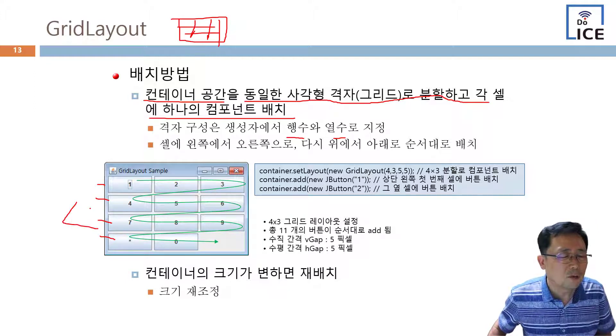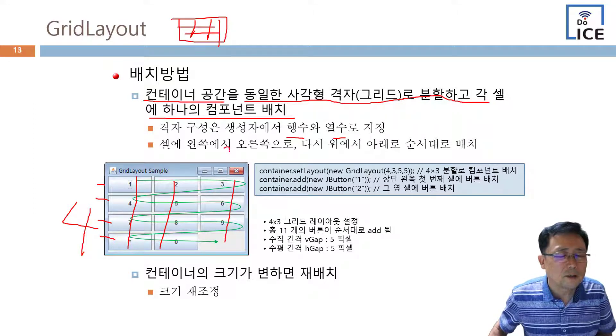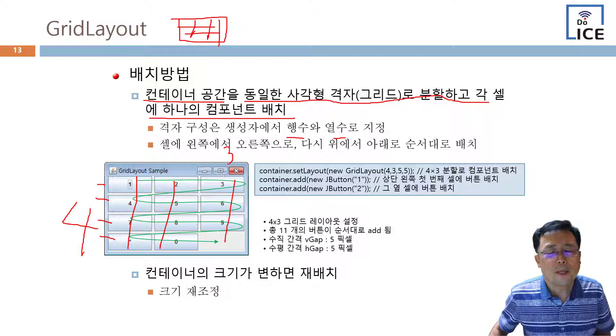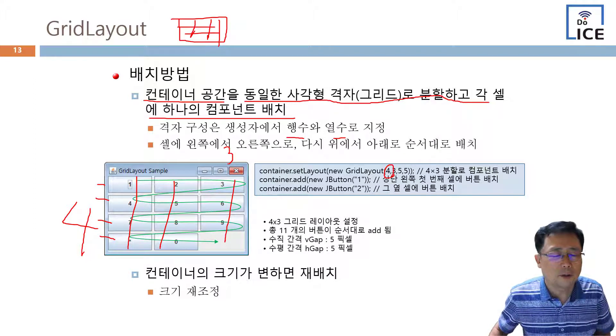행이 4죠. 그 다음에 열수는 이것을 말하죠. 하나, 둘, 셋. 이게 4열의 3행률. 그래서 4열의 3 이렇게 표시를 하는 거죠.